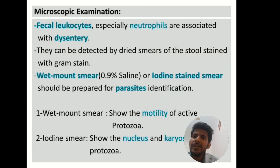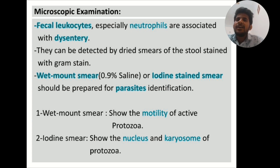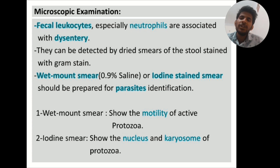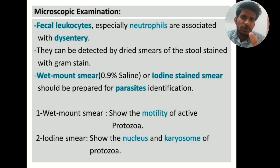In microscopic examination, fecal leukocytes — especially neutrophils — are associated with dysentery. They can be detected by dried smears stained with Gram stain. Most commonly, a wet mount by saline and an iodine smear are prepared for parasite identification. Wet mount shows the motility of active protozoa, and iodine smear shows the nucleus and karyosome of the protozoa.